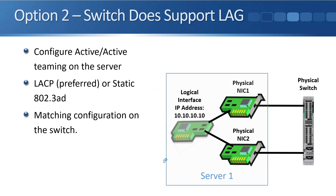Option two: the switch does support link aggregation. In that case, we configure active-active teaming on the server and do a matching configuration on the switch as well. If both the server and the switch support it, it's preferred to use LACP. If either one only supports static, then we'd use static on both sides. Whenever you see a network diagram with link aggregation or a port channel configured on a switch, you'll see it drawn with a ring — a circle around the interfaces that are in that port channel.